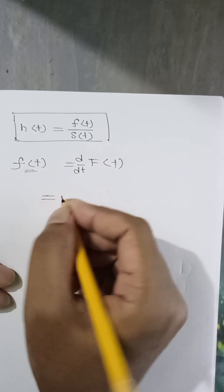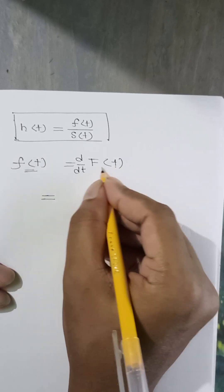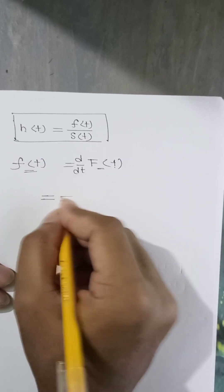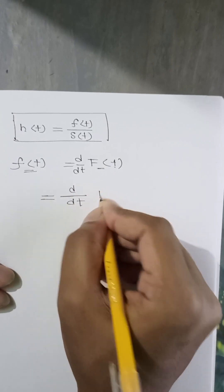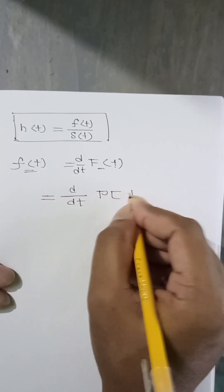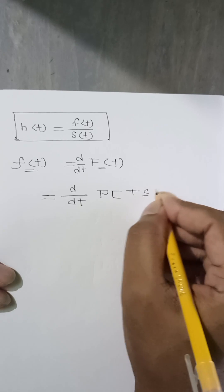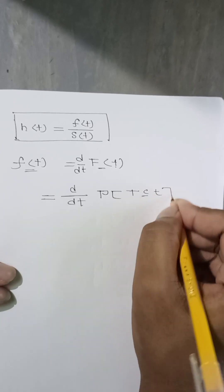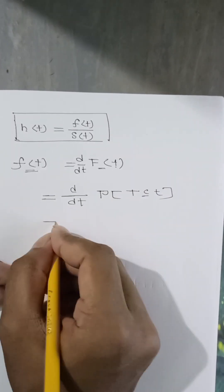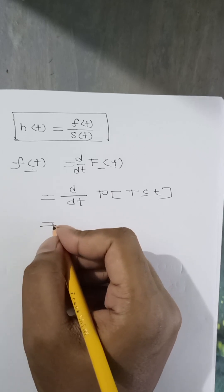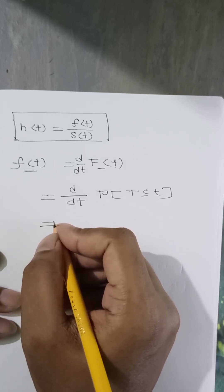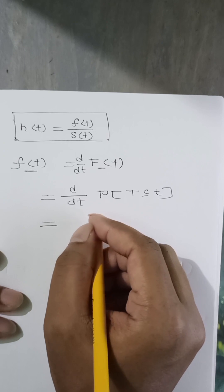Now I want to change f of t in terms of probability. See, d/dt of probability of T less than or equal to small t. By the formula or by the rule of this limit...